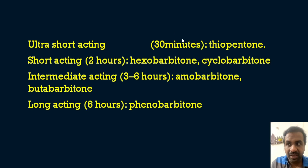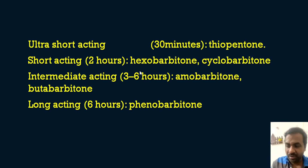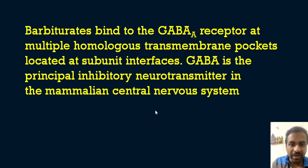Barbiturates are classified by duration: ultra-short acting (within 30 minutes, e.g., thiopentone), short acting (within 2 hours, e.g., hexobarbitone or cyclobarbitone), intermediate acting (3–6 hours, e.g., amobarbitone and butabarbitone), and long acting (6 hours, e.g., phenobarbitone). Barbiturates bind to GABA-A receptors at multiple homologous transmembrane pockets located at the subunit interfaces. GABA is the principal inhibitory neurotransmitter in the mammalian central nervous system.